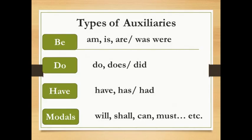In the last part, we talked about the first part of auxiliaries, which was verbs to be. In this part, we'll talk about the auxiliary 'do', which is the base of 'do' and 'does' in the present, and 'did' in the past.